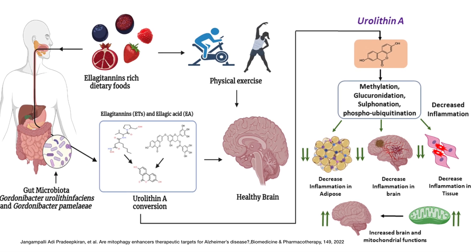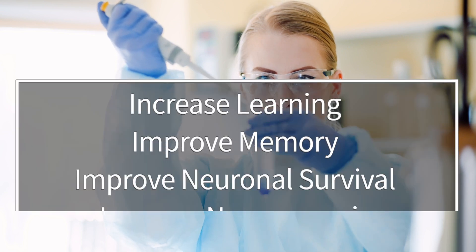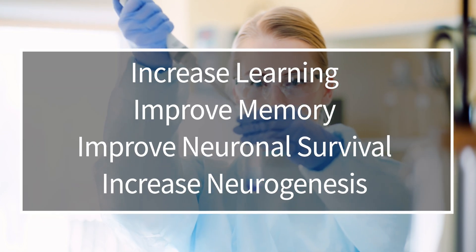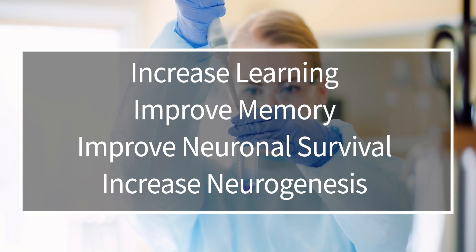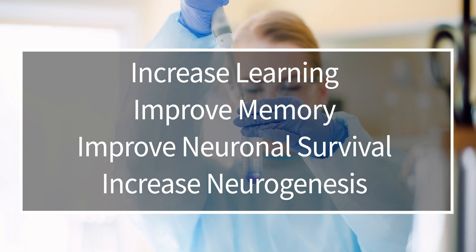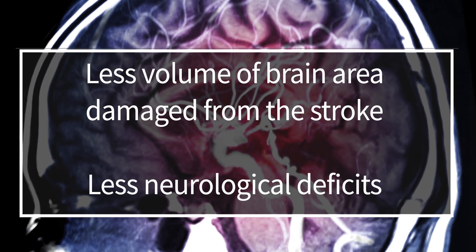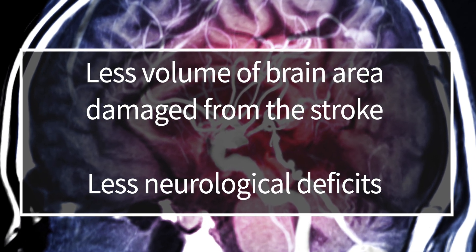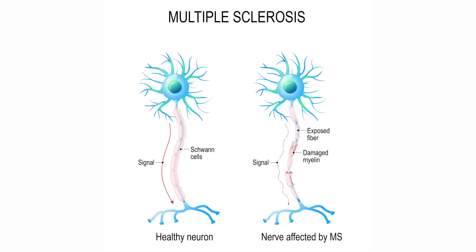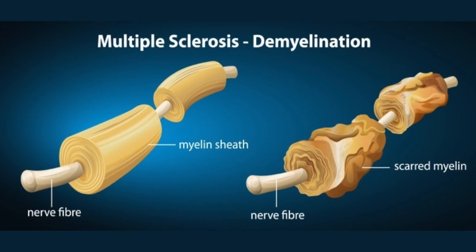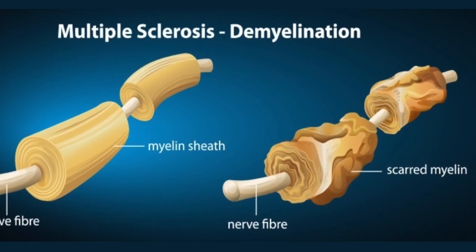Urolithin A has also been shown to decrease neuroinflammation. Animal studies demonstrate its ability to increase learning, improve memory and neuronal survival, and increase neurogenesis — the generation of new neurons — in the hippocampus. Another study found urolithin A to be protective in a model of ischemic stroke, with less brain area damaged and fewer neurological deficits. Recently, urolithin A was shown to have a neuroprotective effect in a mouse model of multiple sclerosis, reducing MS incidence and severity as well as inflammation and white matter demyelination.